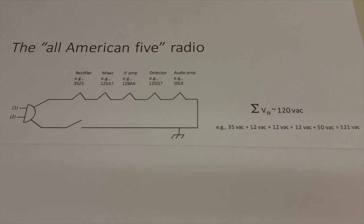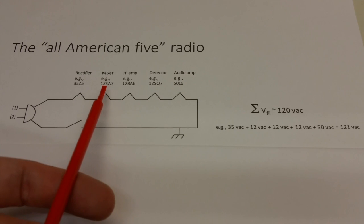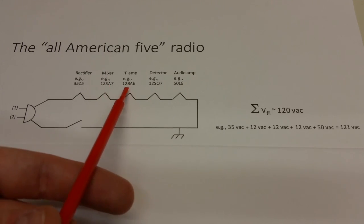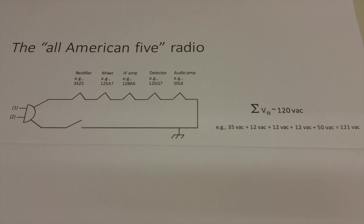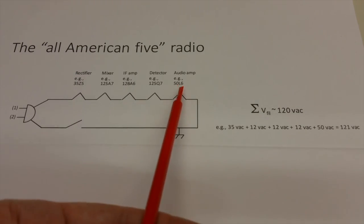So here's an example of the power circuit for a typical All-American 5. There's five vacuum tubes. In this case, I've just listed common tubes for the different stages. So for a rectifier, the 35Z5 was popular. 12SA7s were popular for mixers. 12BA6s for IF amps. Detectors were oftentimes 12SQ7s. And then in the final stage, you had an audio amplifier, which was oftentimes a 50L6.